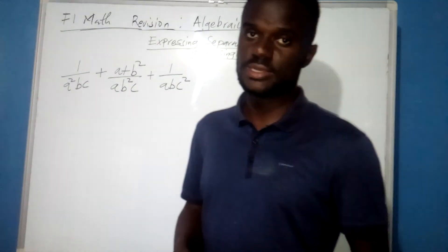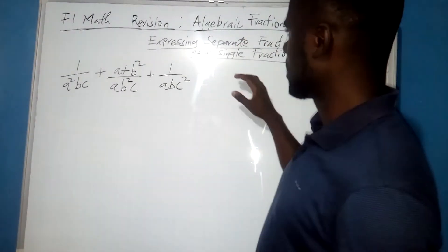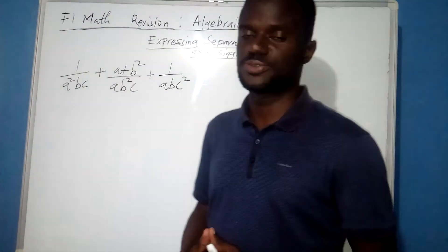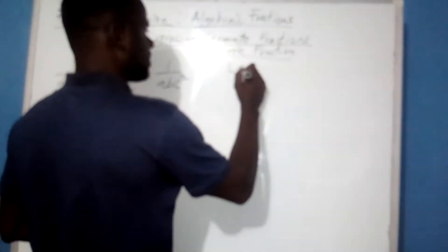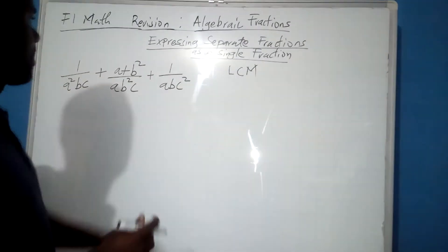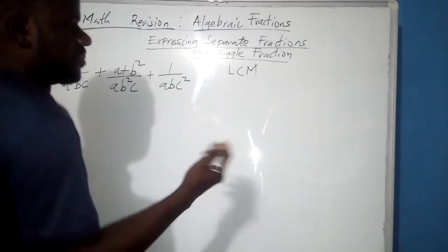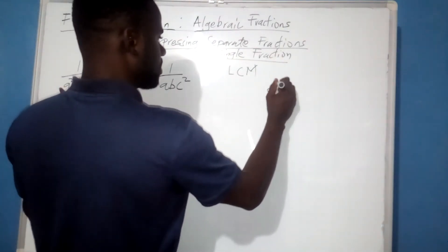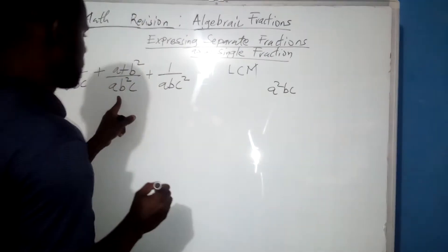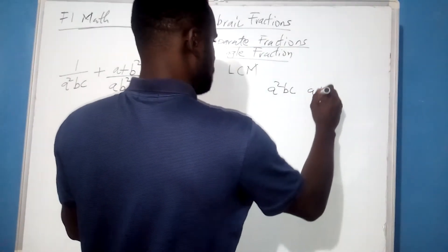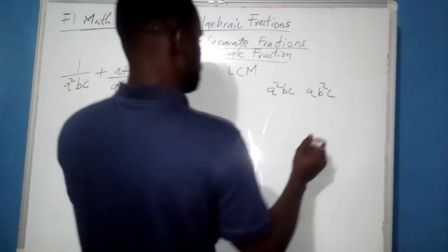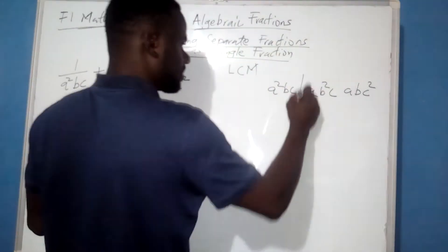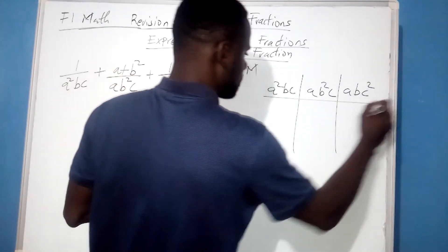Here is another question that we need to write as a single fraction. Let us express this entire question as a single fraction. The first step is simply to get the LCM of the denominators. The first denominator is A squared B C, the second is A B squared C, and the third is A B C squared. So let us get the LCM of this entire expression.